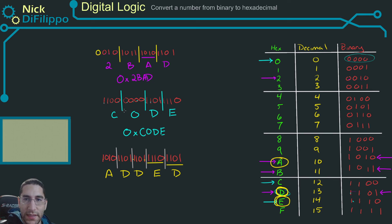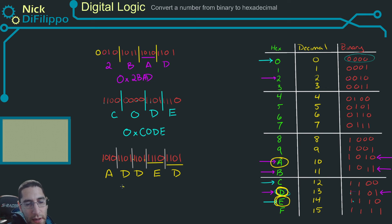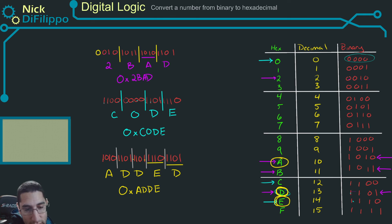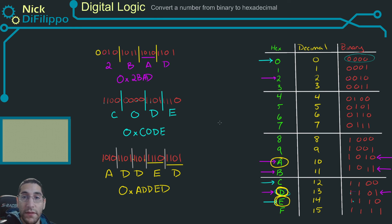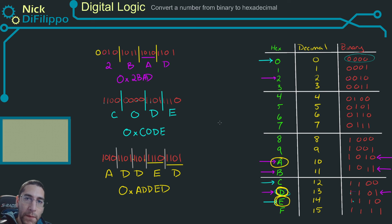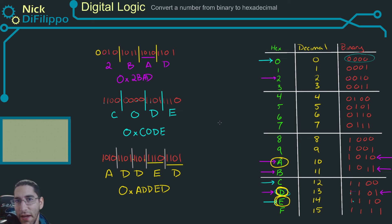So this spells out ADDED. This binary number is the same as the hexadecimal A-D-D-E-D. This is how you convert a binary number to its hexadecimal equivalent. These are just cool examples that have sayings or words.